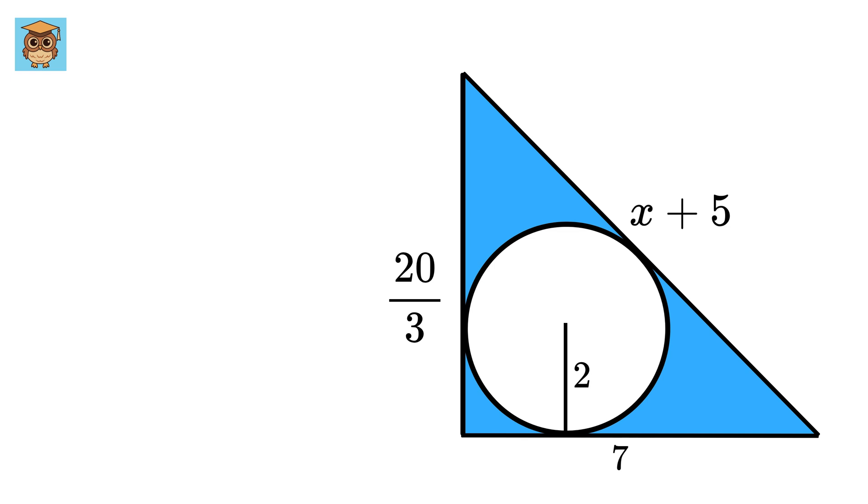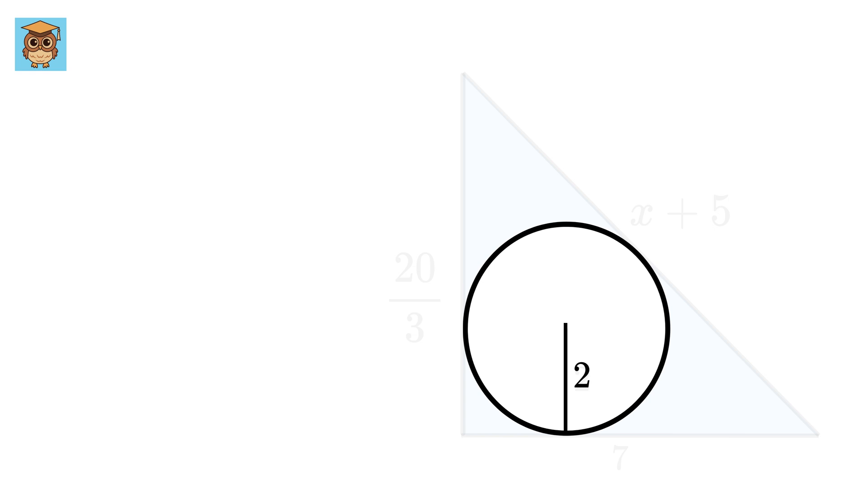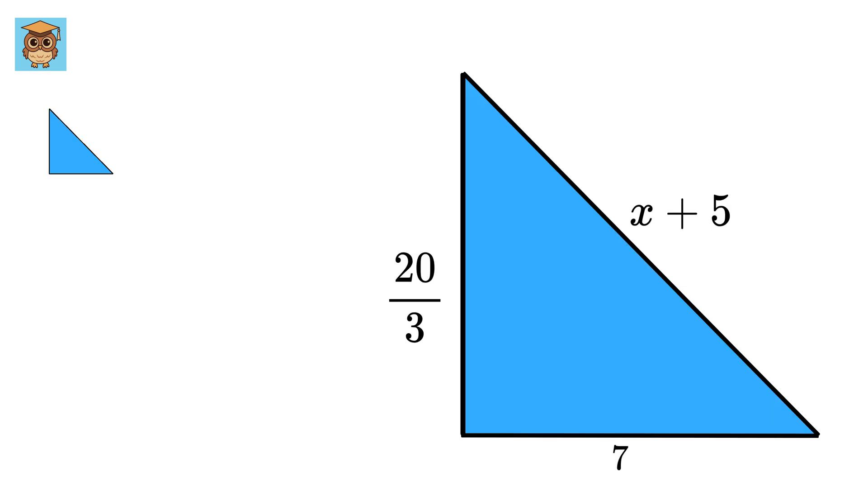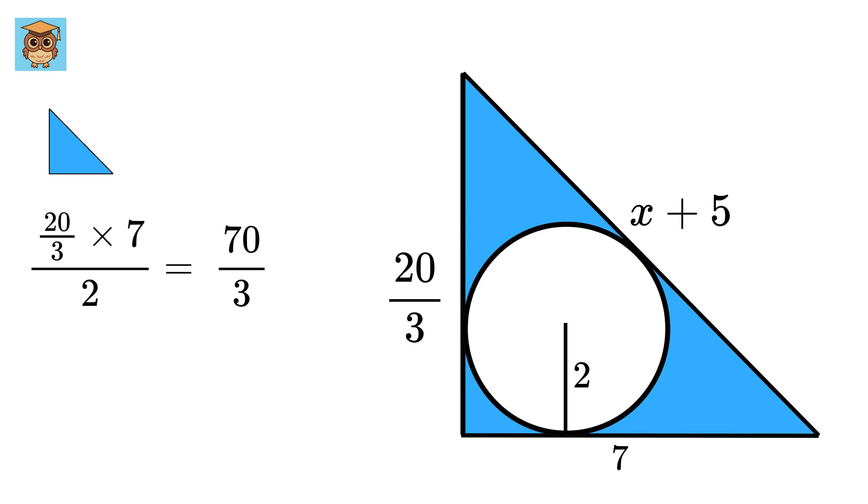Now the area of this shaded region will be the same as the area of this triangle minus the area of this circle. The area of this triangle will be 20/3 times 7/2, or 140/6, which when simplified becomes 70/3.